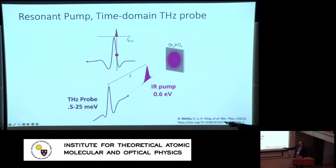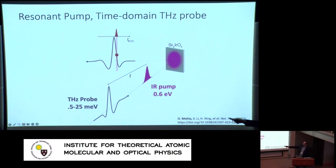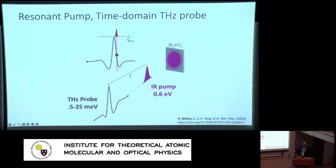We pump with a pulse resonant with the lower-to-upper Hubbard band transition and come in with a broadband terahertz pulse from roughly 0.5 to 25 meV (half a terahertz to six terahertz), measuring the photo-induced spectrum using electro-optic sampling. There are two time axes: the electro-optic sampling time for the terahertz waveform, and the pump-probe time delay t between the infrared pulse and the terahertz pulse. We Fourier-transform the sampled pulse to get a spectrum — converting to frequency, so we don't need to track the internal THz time axis.